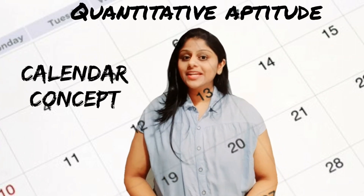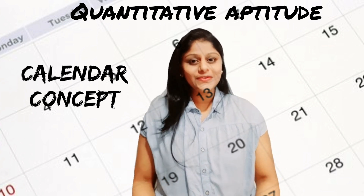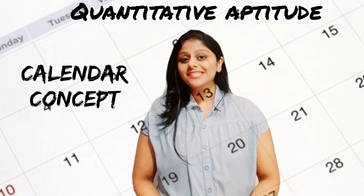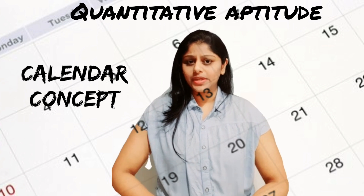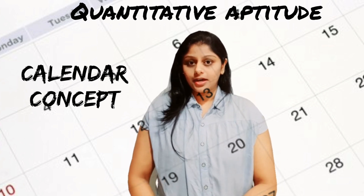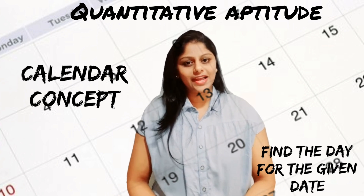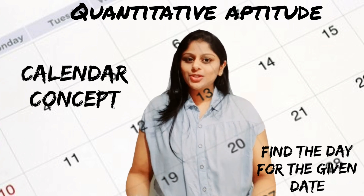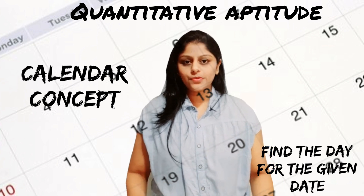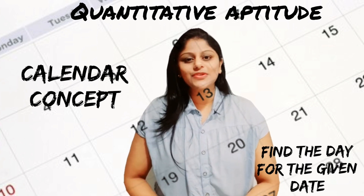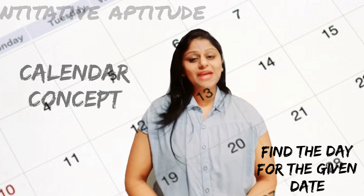Hello everybody, this is Rina and you're watching Rachel's Network. Today I am here with a new chapter of quantitative aptitude — calendar. So what is calendar? Mostly what we do in competitive exams is that we leave the calendar question. If a date is given to you, like 24th of November 1957, and you are asked to find which day that was, we usually don't have time to think during the exam. But today I'll be teaching you a few tricks on how to find a day from a given date.